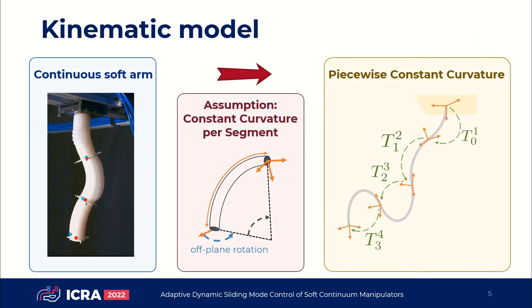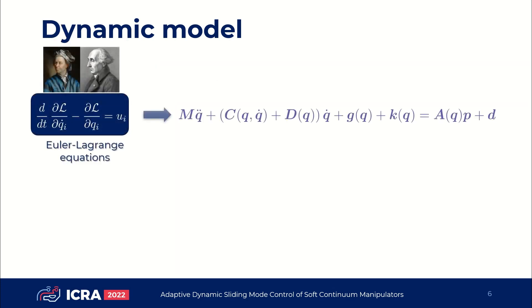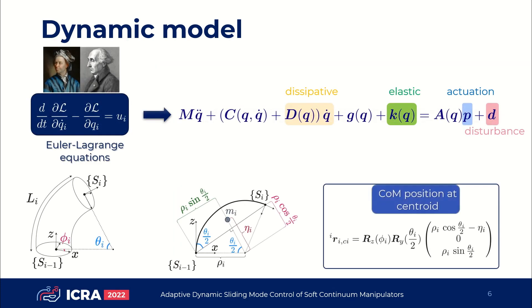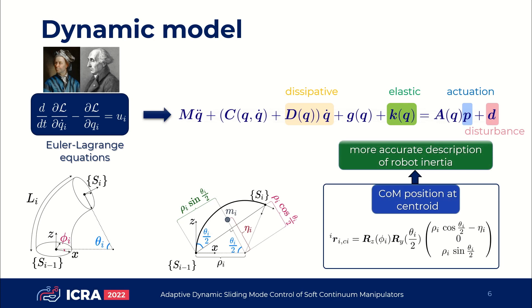Let's first talk about the modeling of the robot. Our kinematic model assumes constant curvature per segment, which allows us to approximate the motion of the arm using a piecewise constant curvature model. To obtain the dynamic model, we use the Euler-Lagrange formulation. Here you can see the equations of motion in Lagrangian form, where the damping, elastic, and disturbance terms are also considered.